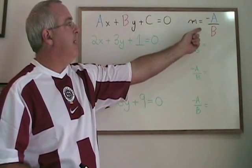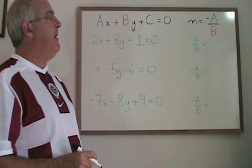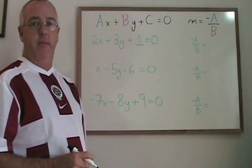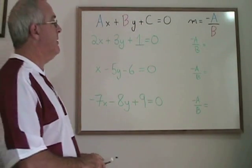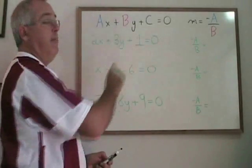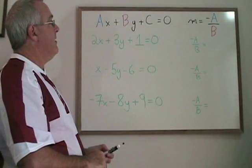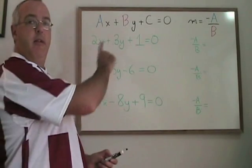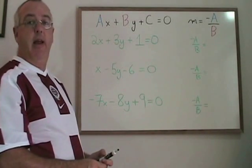There is a small formula for the slope where the slope m is equal to negative a over b, but this only works if the equation is in this form. If it is not, we have to do algebra first to get it in this form before we define our a and our b.